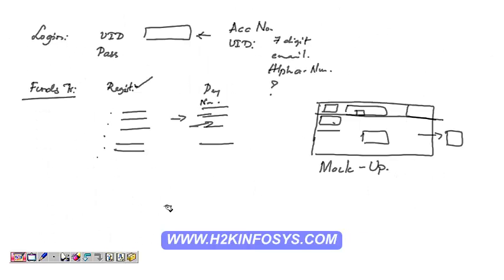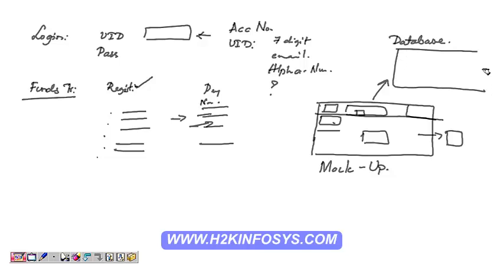For example, our internet banking website needs a database in the backend because all customer information has to be stored. This database will contain tables — customer information stored in an organized way with different columns, types of data, different tables, and the relationships between those tables. This is nothing but the database design.